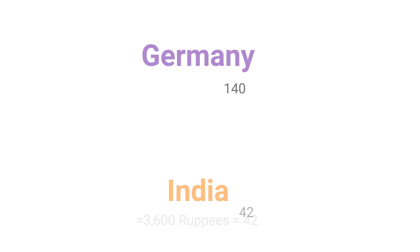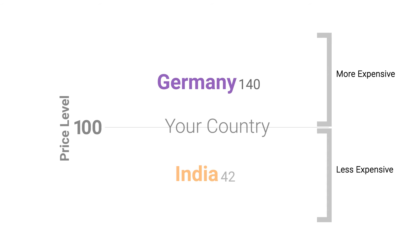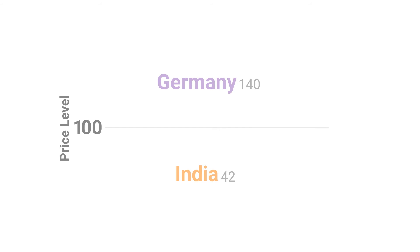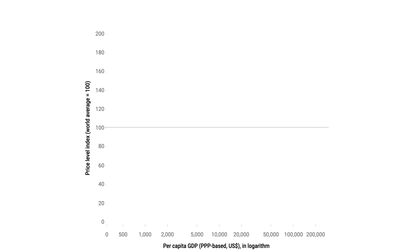If we set the price level reference to the basket in your country as 100, then the price level for India is 42, and for Germany, 140. To understand this better, let's consider the price level index, or PLI, which is the ratio of an economy's PPP to its market exchange rate. PLIs provide a measure of the differences in price levels between economies by indicating the number of units of the common currency needed to buy the same quantity in each economy. If the world average price level is set at 100, then an economy with a PLI higher than 100 is relatively more expensive compared to the world average. If its PLI is lower than 100, then the opposite would be true.